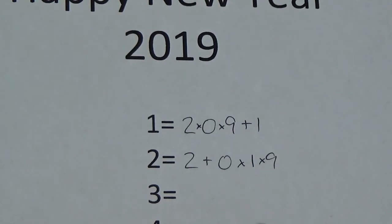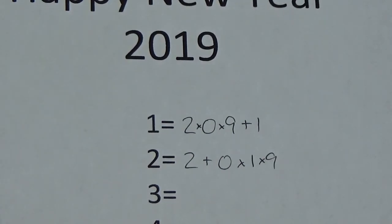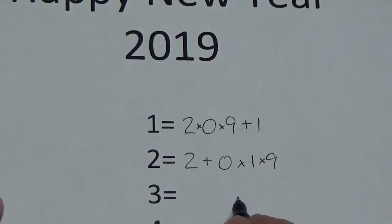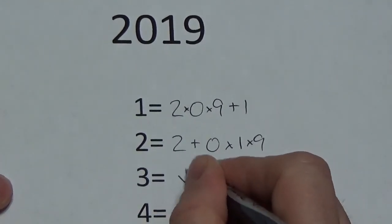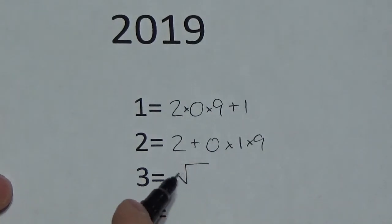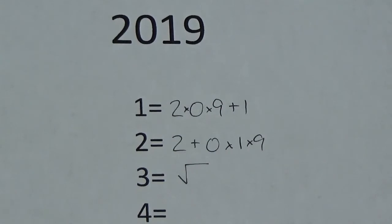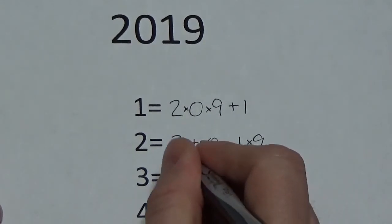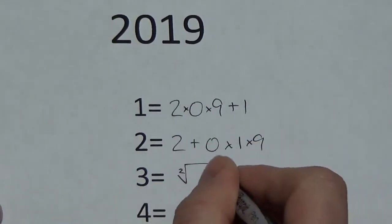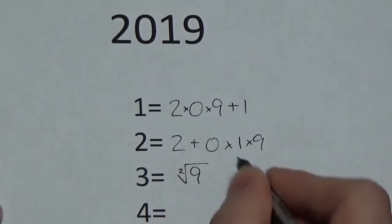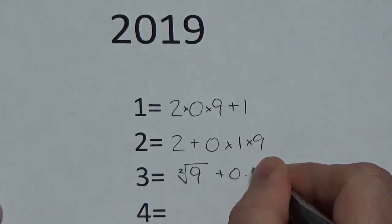Now there are some rules here. If you wanted to do the square root of something, you can't just put this symbol down. Because remember, the root index could vary, and so you need to specify that this is a square root. Let's just make the rule that I'm going to take that digit 2 and put it right there. But 3 is just going to be the square root of 9 plus 0 times 1.